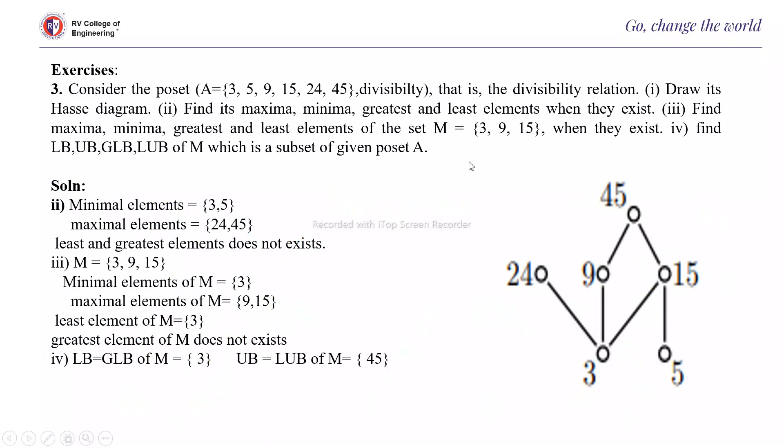So here, if you observe minimal elements, if you see 3 and 5, there is no least element because there are multiple minimal elements, and maximal elements are 24 and 45. And again, since there are multiple maximal elements, you will not be having greatest element. And that is why here it is written: least and greatest element does not exist. You have multiple maximal and multiple minimal elements.